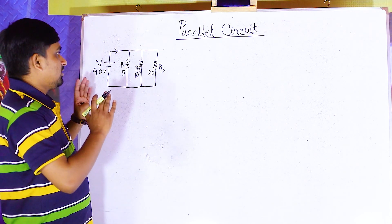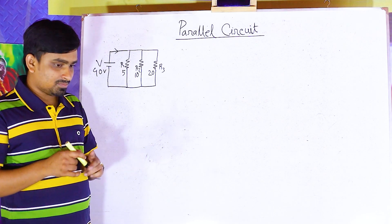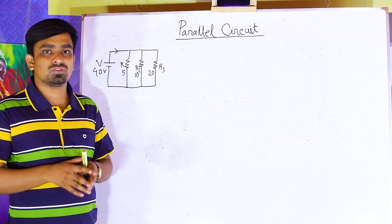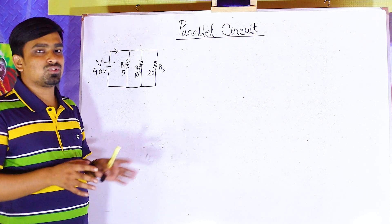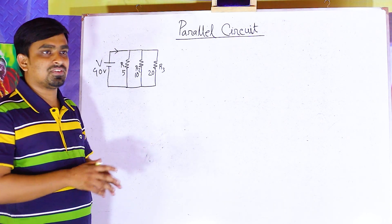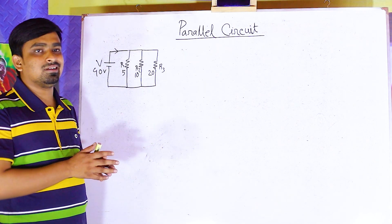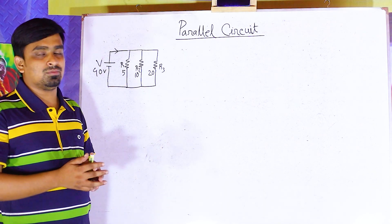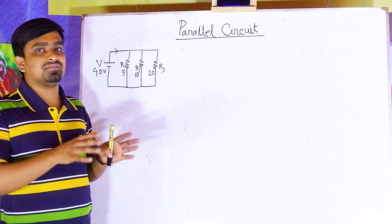Now, in this parallel circuit — similar to a series circuit — we will solve it three ways: first, total resistance; second, KCL applied; and third, current divider rules.